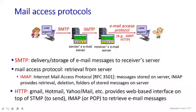Now let's see the mail access protocol and how we are going to utilize this. Here you can see Alice and Bob with user agents. We are going to send a message from here to there, using SMTP connections — here is the sender's email server and this is the receiver's email server. By using the email access protocols, we are going to send it from the mail server to your user agent.